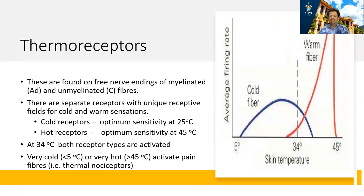The other type of receptor found within the skin are thermoreceptors. Thermoreceptors are free nerve endings, either of the A-delta fibers or the unmyelinated C fibers. Research has found two populations: fibers that detect cold and fibers that detect hot. They operate over different temperature ranges — cold receptors tend to be maximally active around 25 degrees, whereas warm receptors tend to be maximally active around 45 degrees. When your hand is placed in a particular temperature, you activate both cold fibers and warm fibers, and it's a combination of information from these fibers that the brain uses to process what the perceived temperature is.